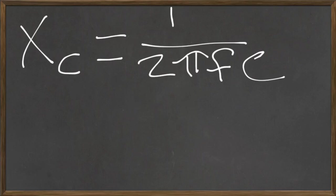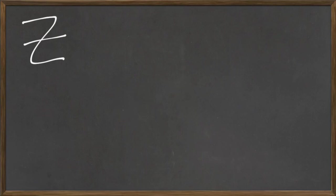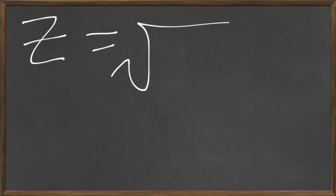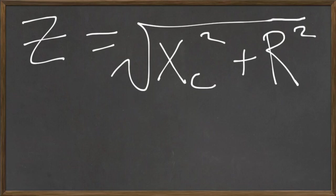Going back to the circuit with a capacitor and a resistor, the overall impedance is the total opposition to current flow. The impedance Z equals the square root of the reactance squared plus the resistance squared. The reactance is in ohms, the resistance is in ohms, and therefore the impedance is also measured in ohms.